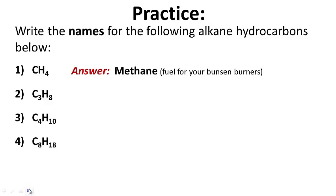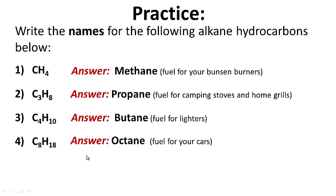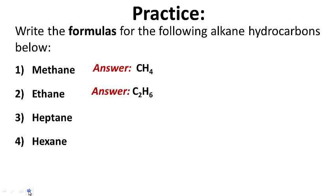Number one is methane — it's the fuel for your Bunsen burners. Number two is propane — the fuel for camping stoves and home grills. Three is butane — that's a fuel for lighters. And four is octane — it's a fuel for your cars. Now working backwards: write the formulas for the following alkane hydrocarbons. Methane: CH4. Ethane: C2H6. Heptane: C7H16. And hexane: C6H14.